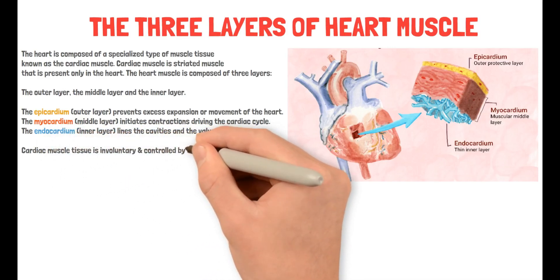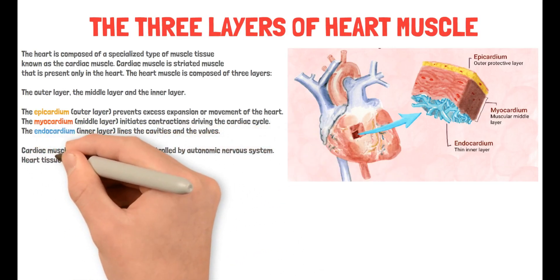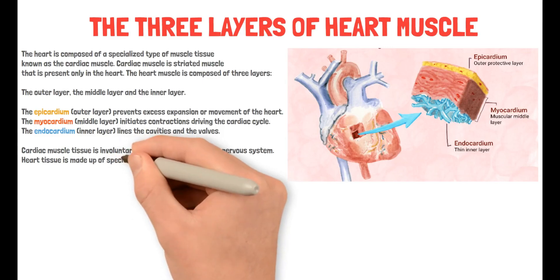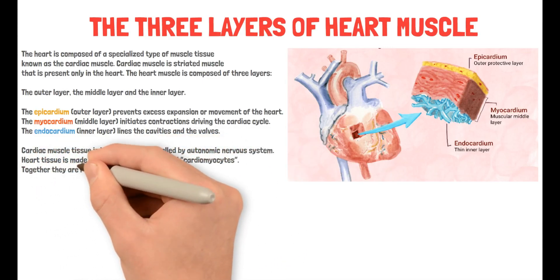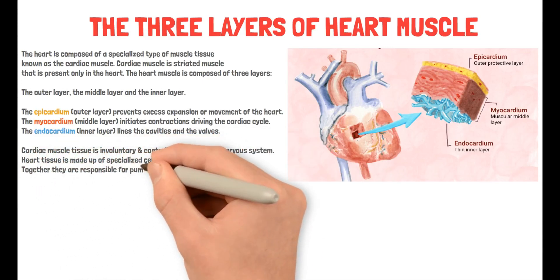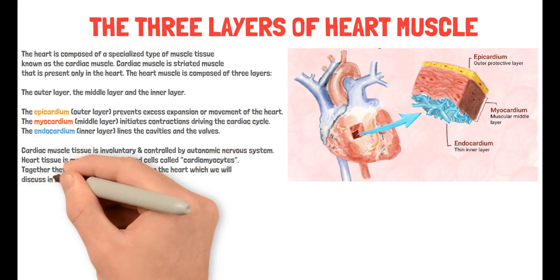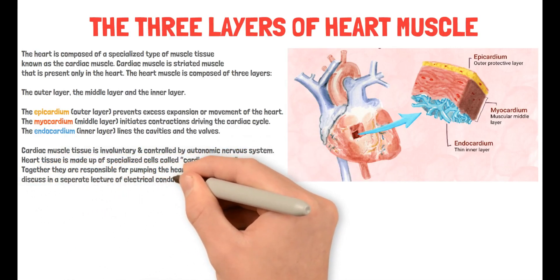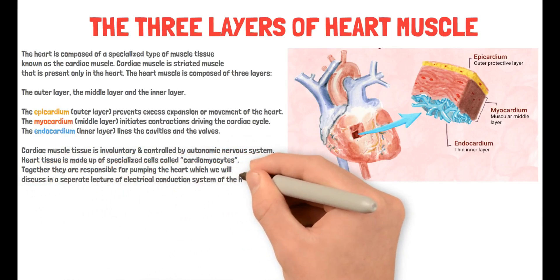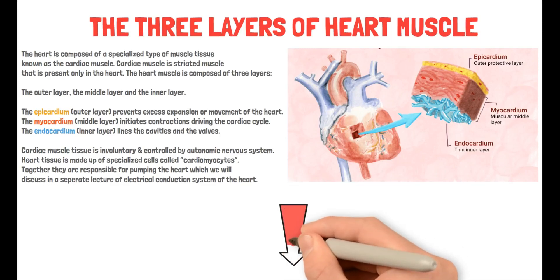Cardiac muscle tissue is involuntary and controlled by the autonomic nervous system. Heart tissue is made up of specialized cells called cardiomyocytes, and together they are responsible for pumping the heart, which we will discuss in a separate lecture on the electrical conduction system of the heart.